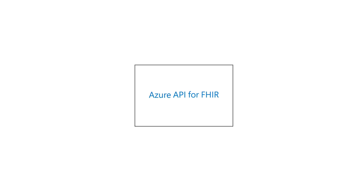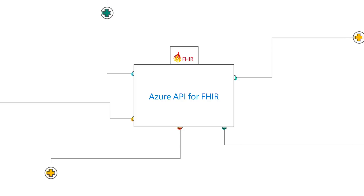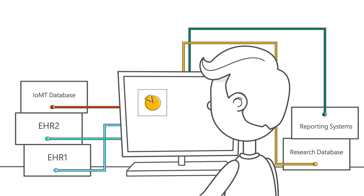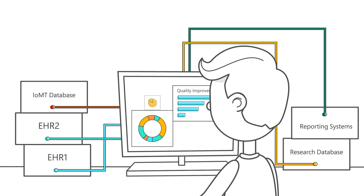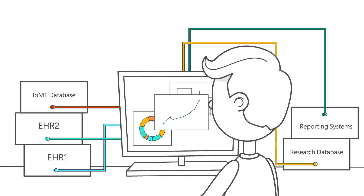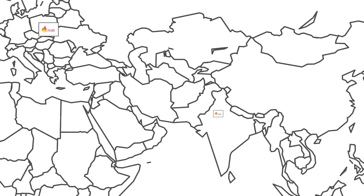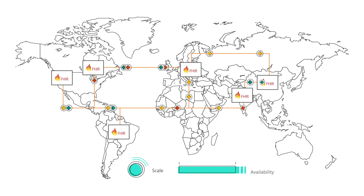Since the Azure API for FHIR implements the FHIR spec and keeps it up to date, any systems that use FHIR can connect to your service and start exchanging data. And once your data is in the Azure API for FHIR, you get access to all the power of the Microsoft Cloud and accelerate machine learning. Azure API for FHIR supports health data compliance and is built on Azure, which means you can have global scale and high availability.